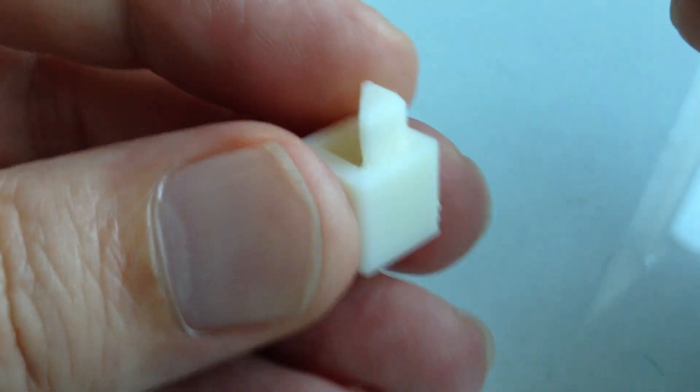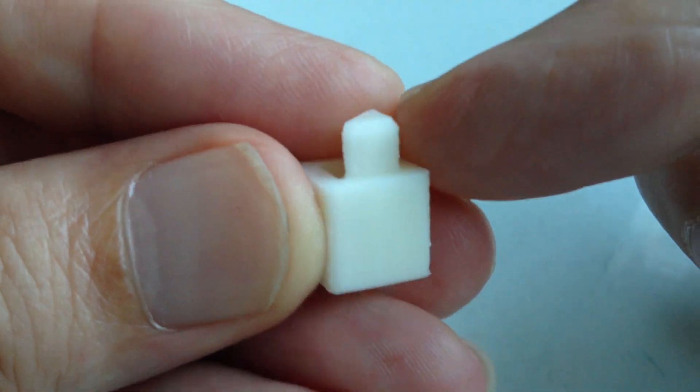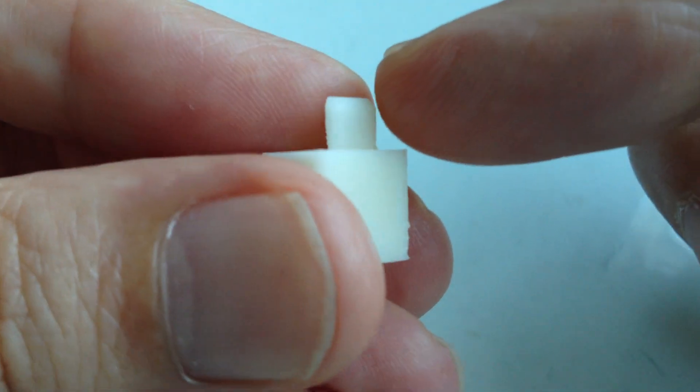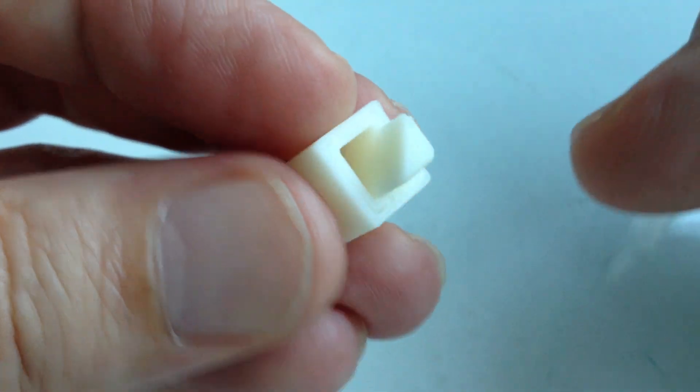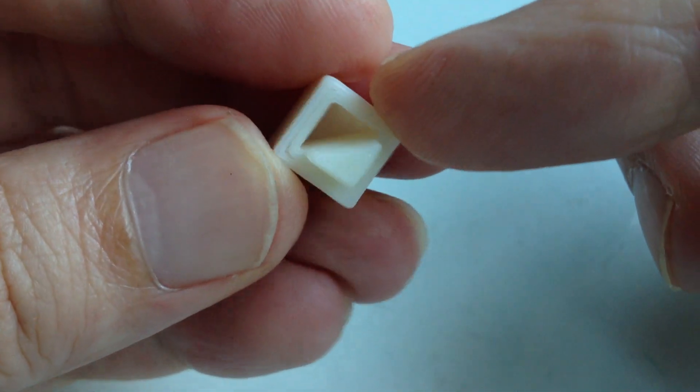On this version I've put a slight bevel just at the top of the peg to make it easier to go in and I've also reduced the size of the hole slightly.